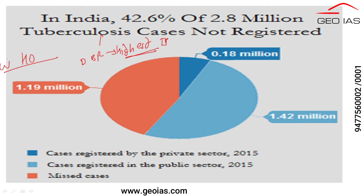If you are writing any essay - say, challenges to India for the next 25 years - that can be a potential topic for your prelims, mains, and even the interview section. For that topic, you have to remember that tackling tuberculosis is one of the challenges in the social sector.